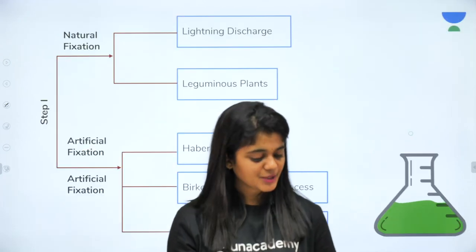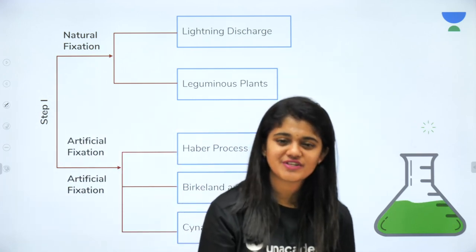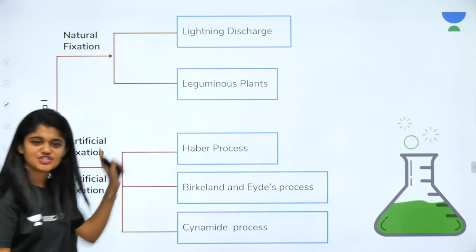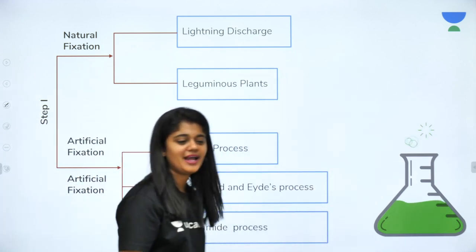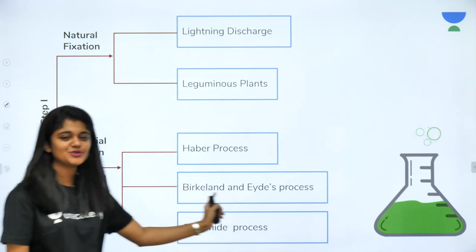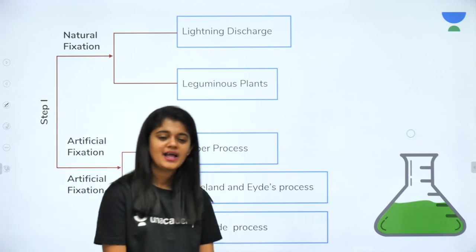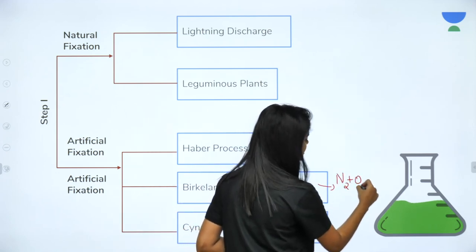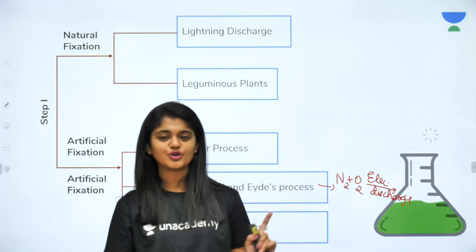Now let's continue our lesson. We were discussing the nitrogen cycle, specifically Step 1 — nitrogen fixation. There are two types: natural fixation and artificial fixation. We completed natural fixation and the Haber's process for artificial fixation in the last class. The next artificial fixation method is the Birkland and Eyde process, in which nitrogen and oxygen undergo electric discharge together.